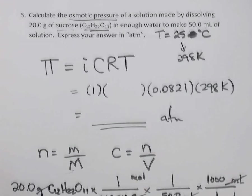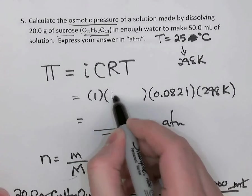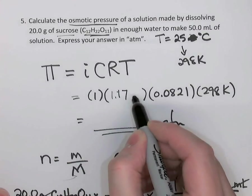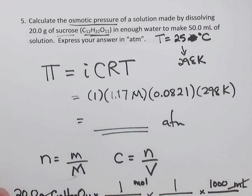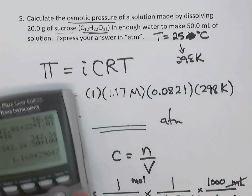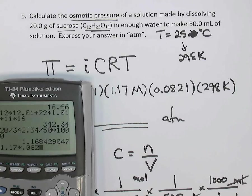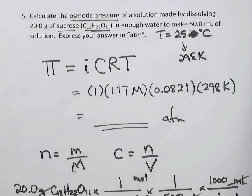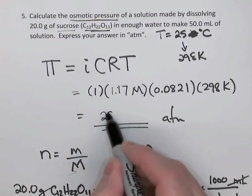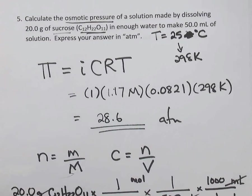So let's take that answer for concentration and put it back into our formula, 1.17 molarity. And now we can evaluate the osmotic pressure. 1.17 times 0.0821 times 298. We have 28.6 atmospheres of pressure.